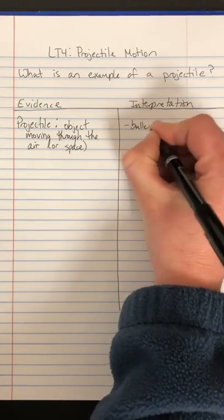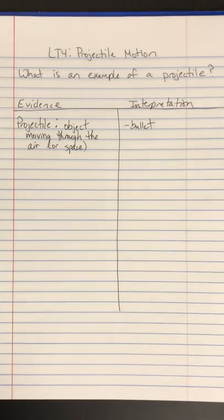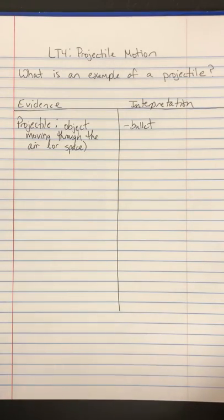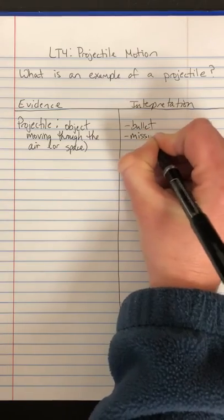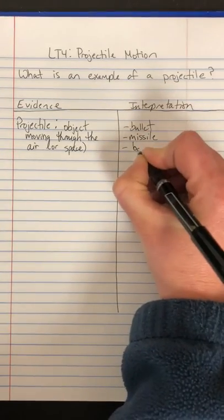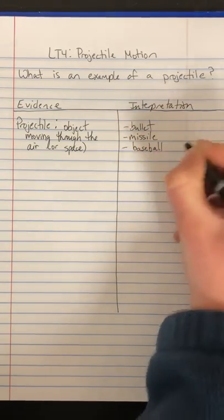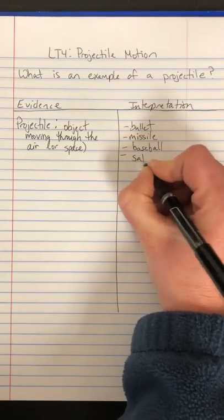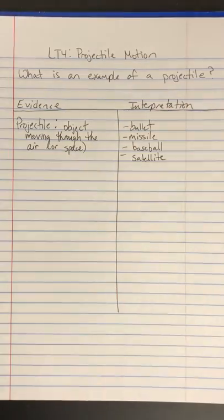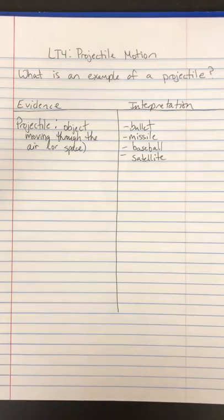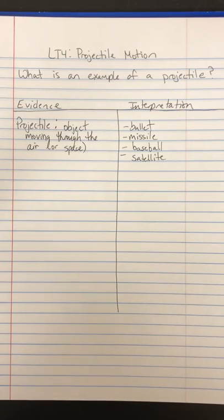You guys are going to watch a Mythbusters clip today dealing with a bullet fired and a bullet dropped. So actually a bullet is an example of a projectile, maybe a missile, maybe a baseball. Something like that could be a satellite. If you have direct TV or dish net, that thing's rotating around the earth at the exact same rate as we are to keep that satellite out there aimed above your house, essentially. So that would be another example of a projectile.